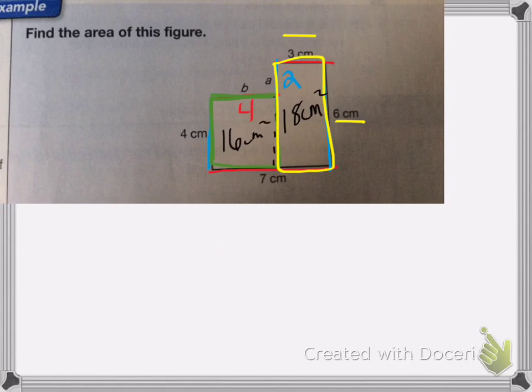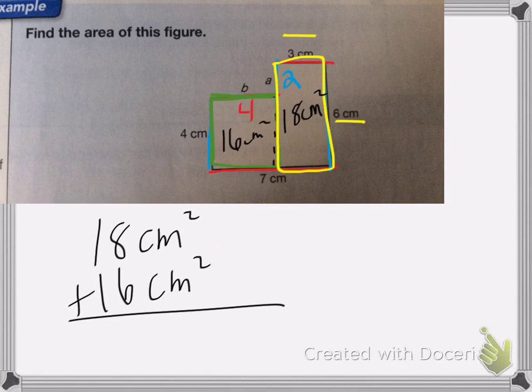Now I'm going to add together those two areas. So 18 centimeters squared plus 16 centimeters squared. 8 plus 6 is 14, carry my 1. 1 plus 1 plus 1 is 3. So my total area is 34 centimeters squared.